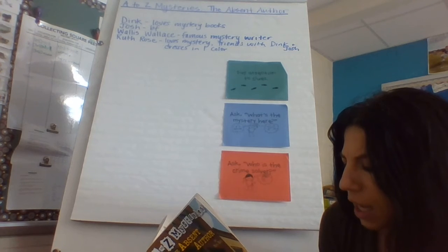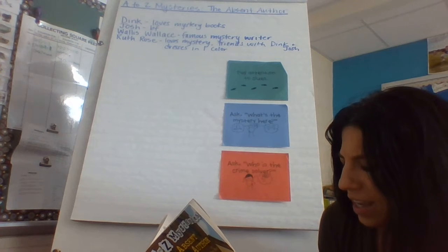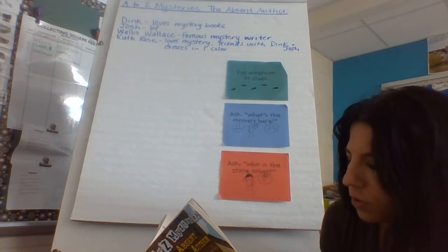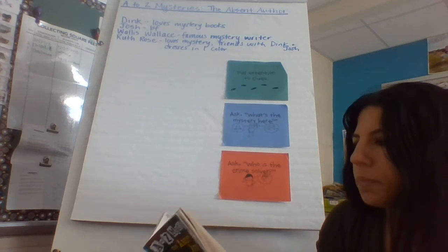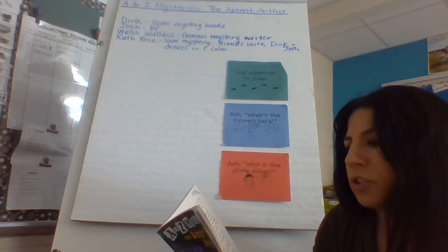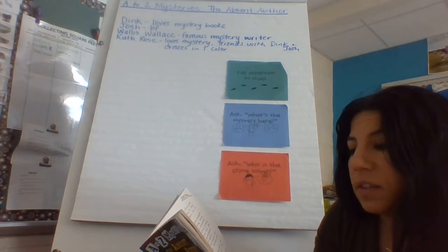Where is he? Dink whispered to Tommy Tomko. Tommy turned around. Beats me. He's not here yet. And Mr. Paskey looks worried. What's going on? Ruth Rose said. Dink told her and Josh what Tommy had said. Paskey does look pretty nervous, Josh said.